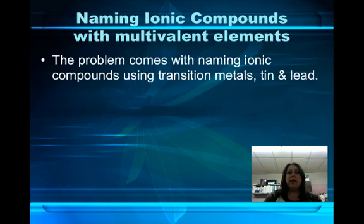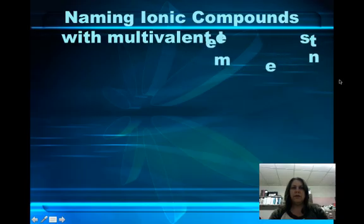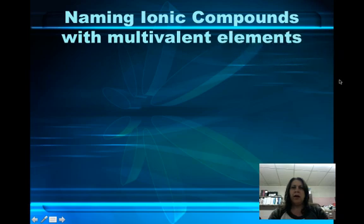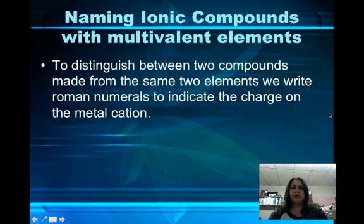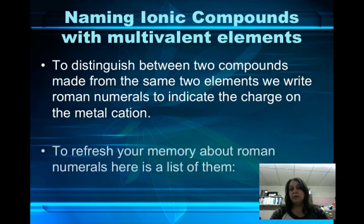We run into problems when it comes to naming ionic compounds with multivalent elements. Because they can have more than one charge, we need to figure out what that charge is. When we have two compounds made up of the same two elements, we need to distinguish between them. In order to do that, we use Roman numerals to indicate the charge on the metal cation.